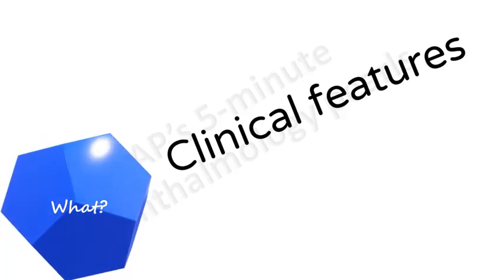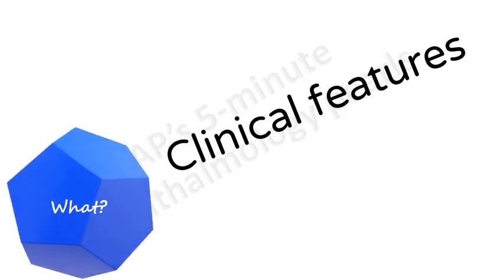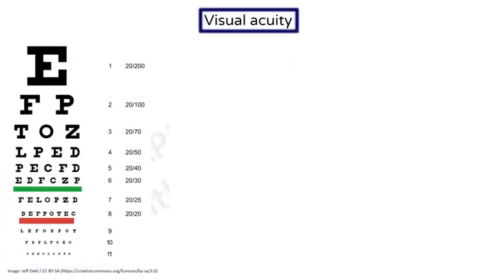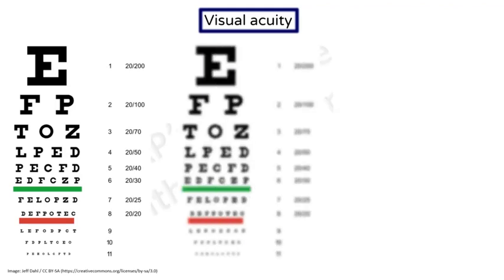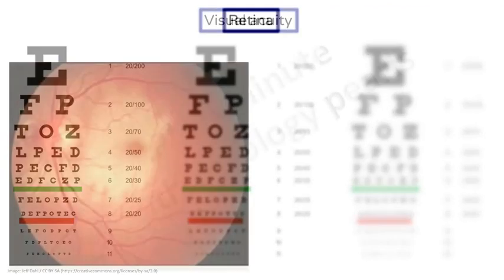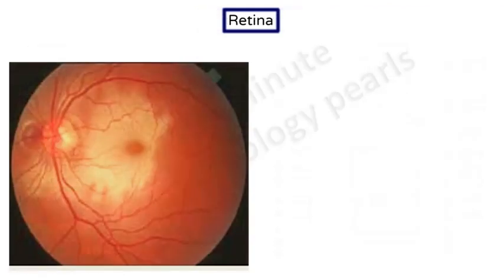What are the clinical features of Berlin's edema? Vision is affected if the macula is involved. It may range from mildly diminished to severe loss of vision. In the retina, there is grayish-white opacification. Since the pathology is in the deeper retina, blood vessels are clearly seen.